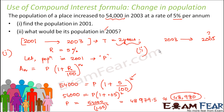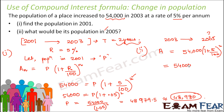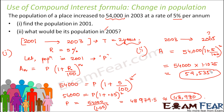Let us say that the population for 2005 is denoted by A. This time we are calculating the amount, not the principal. The principal is always the initial value and the amount is always the final value after N years. We know the population in 2003 was 54,000. So: A = 54,000 into 1 plus R by 100 to the power N, where N is 2. This equals 54,000 into 1.1025, which is 59,535. So this would be the population in 2005.